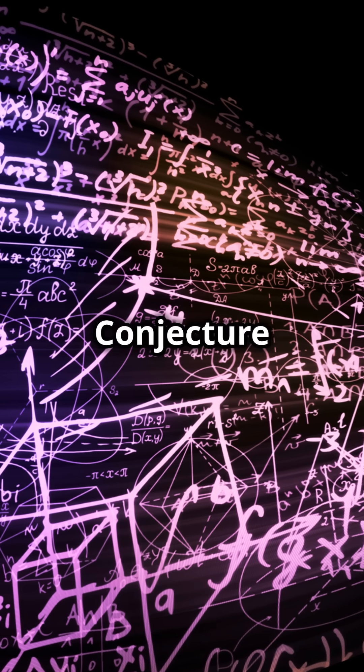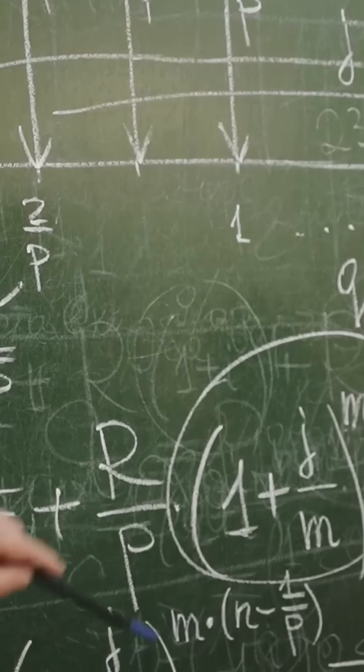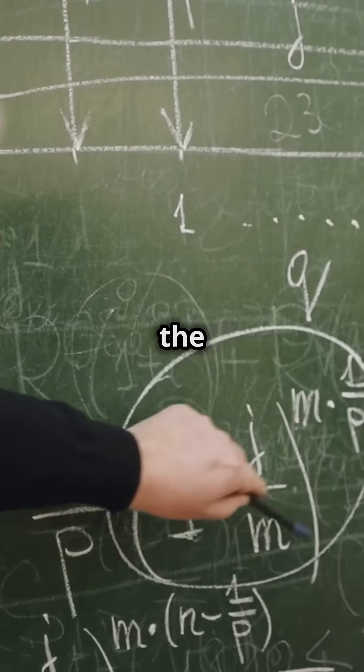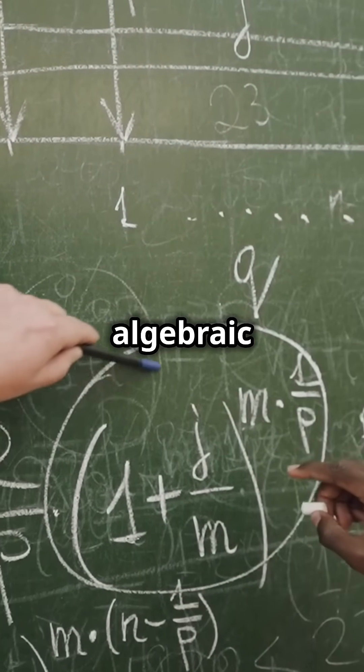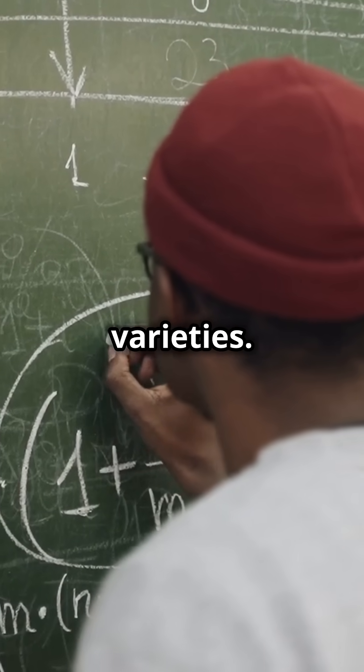The Hodge Conjecture is like the elusive unicorn of algebraic geometry and topology. It's all about understanding the relationship between algebraic cycles and cohomology classes in projective algebraic varieties.